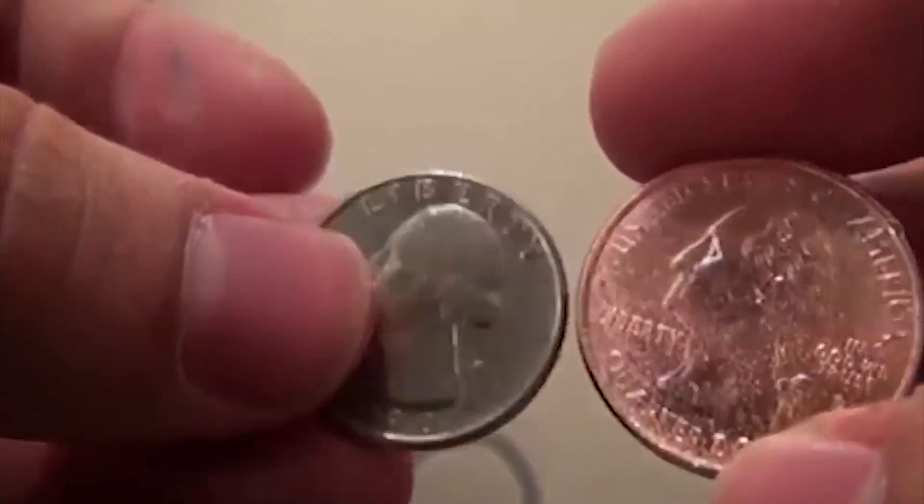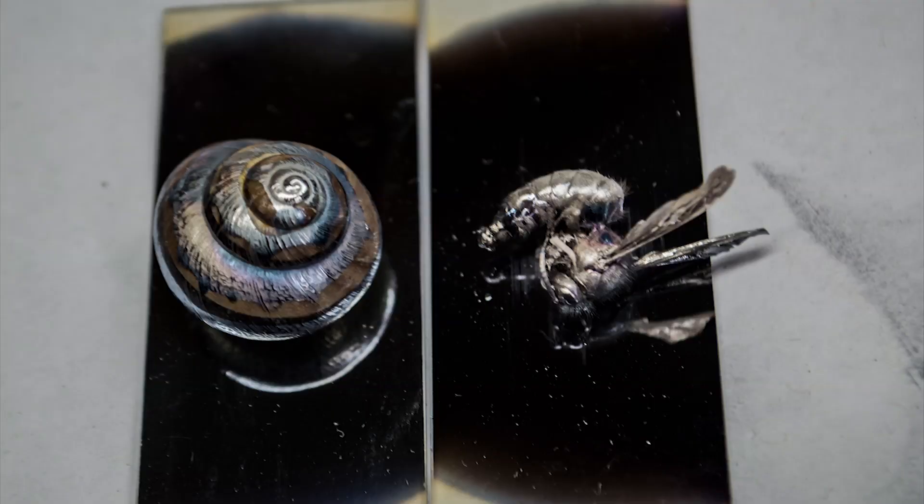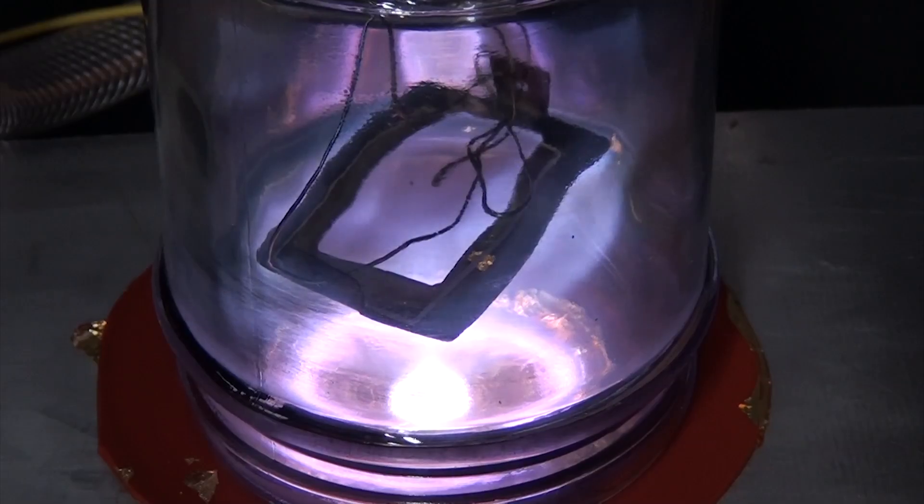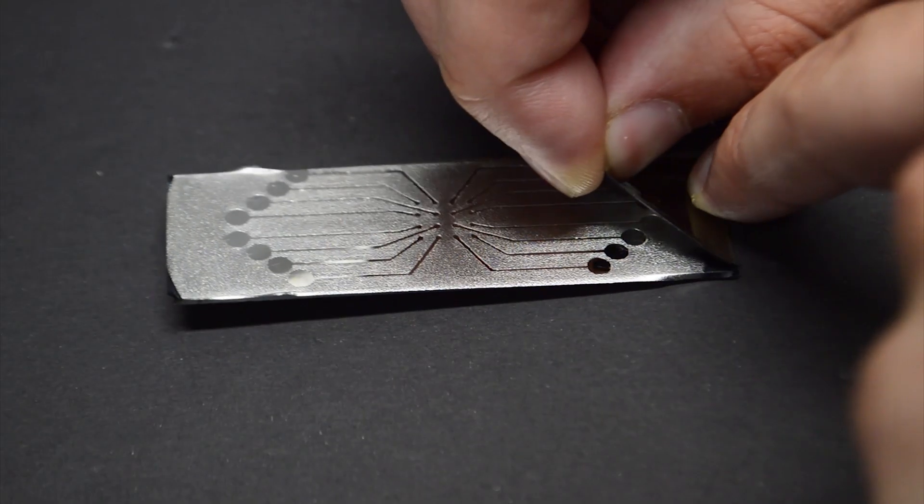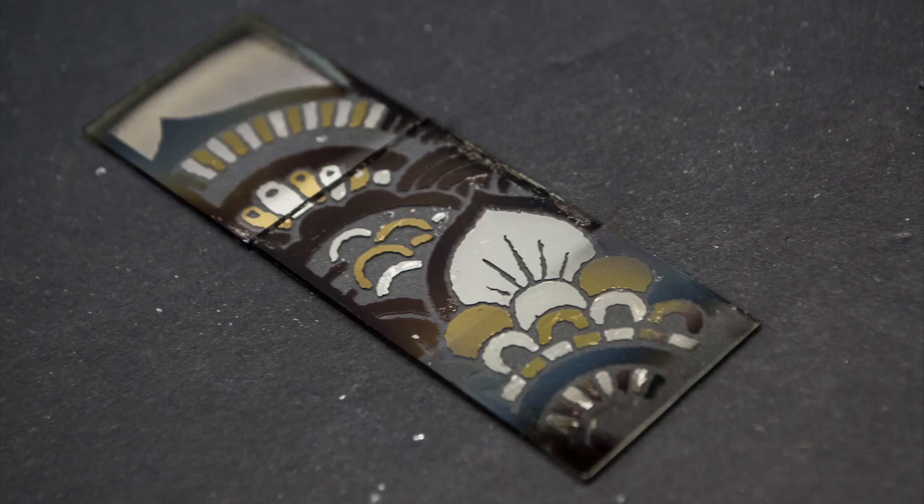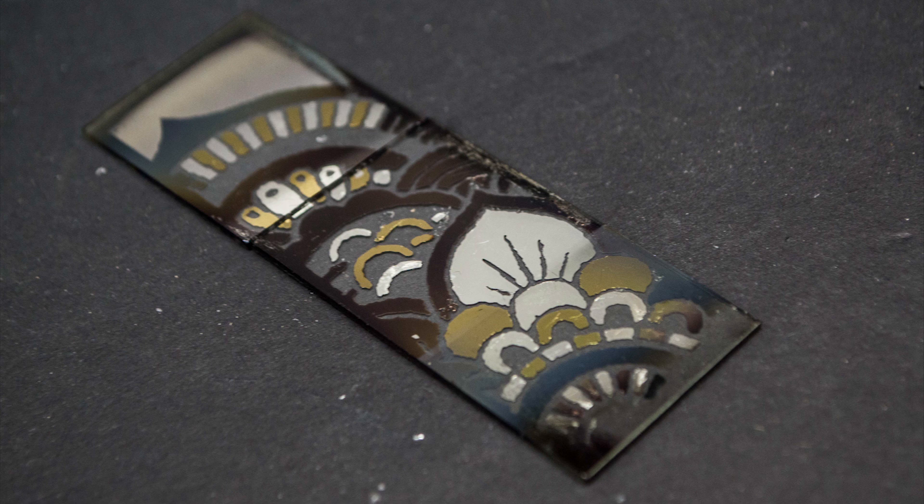Unlike electroplating, where you can only cover conductive materials, this device lets you coat anything you want. Last time we only used plain glass, but this time we're going to go through a bunch of other materials, as well as how to make these intricate designs on the things that you're coating.